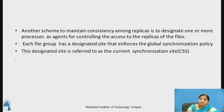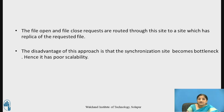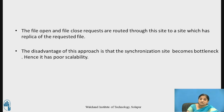Another scheme to maintain consistency among replicas is to designate one or more processes as agents for controlling access to file replicas. Each file group has a designated site called the current synchronization site that enforces the global synchronization policy. File open and close requests are routed through this site to a site which has the replica of the requested file. The disadvantage of this approach is that the synchronization site becomes a bottleneck when the distributed system is large, giving it poor scalability.